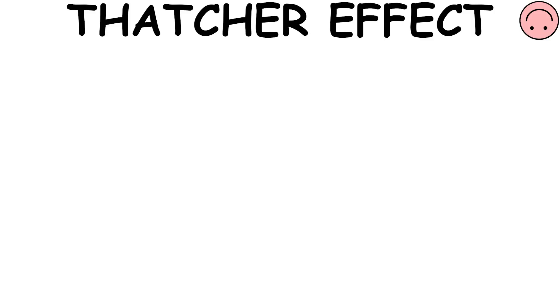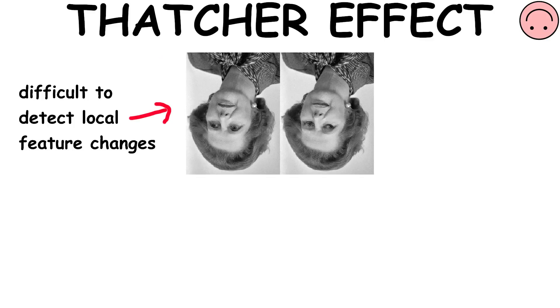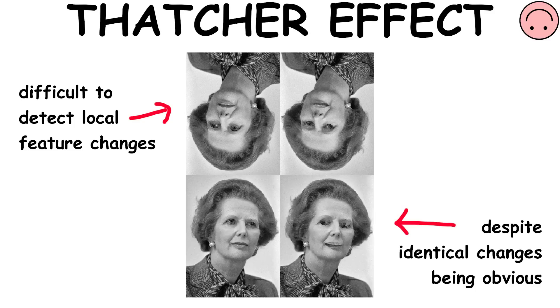Thatcher effect. The Thatcher effect, or Thatcher illusion, is a phenomenon where it becomes more difficult to detect local feature changes in an upside-down face, despite identical changes being obvious in an upright face.